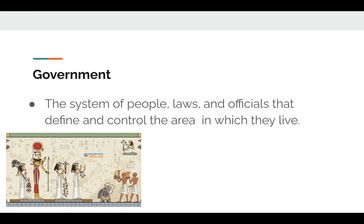Our next feature of civilization is government. Government is the system of people, laws, and officials that define and control the area in which they live. It's people who are in charge, responsible for making laws, and this helps maintain order and keep this civilization moving along smoothly. Do we have government? Absolutely. We live in Albany — Albany County is the seat of New York State government, and you have your own town government.